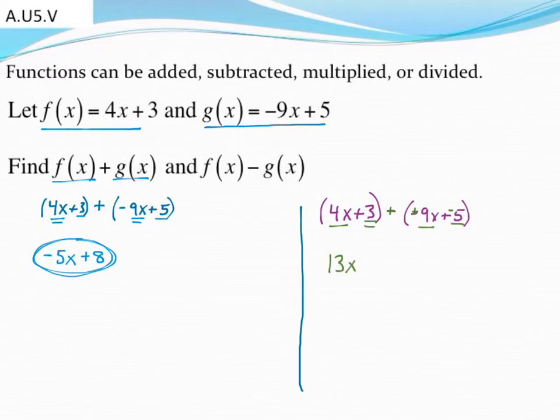And then I've got a positive 3 plus a negative 5, and that will add up to negative 2. So 13x minus 2 becomes the difference of those two functions, f of x minus g of x.